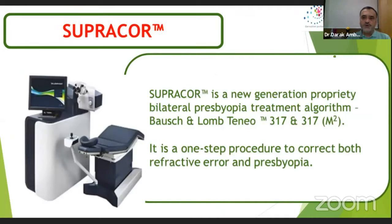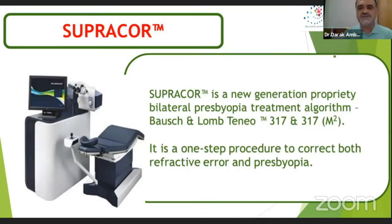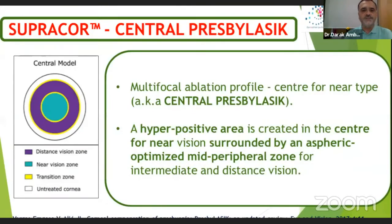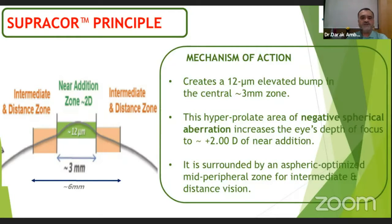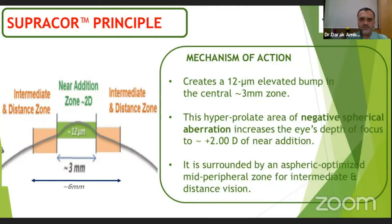So, I'll be talking about SupraCore. I won't talk about the basic principle — it's just creating a central 3mm bump, so that works center for near. A hyperpositive area is created in the center to help for near vision. Dr. Mojita has already covered the mechanism of action of SupraCore, and the other two platforms have been covered by Dr. Kumar and Dr. Kudlu.